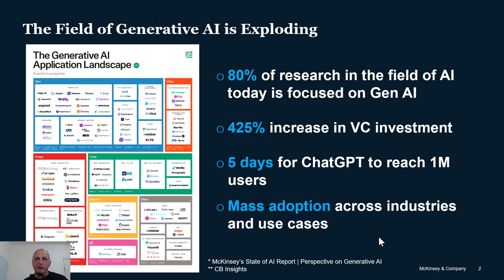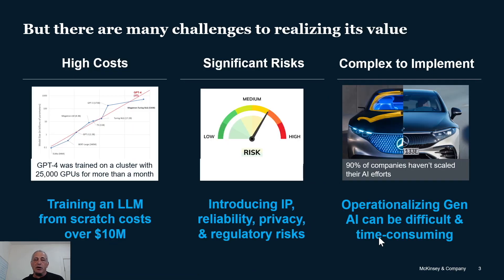Generative AI is the buzz today. Technologies like ChatGPT reached one million users in five days — that's faster adoption than any other technology in the industry. Everyone is talking about it, and everyone is trying to deploy it and implement some real business applications out of it.